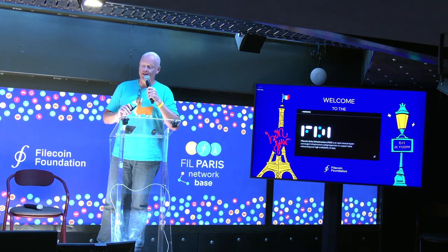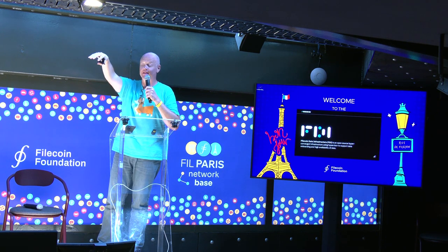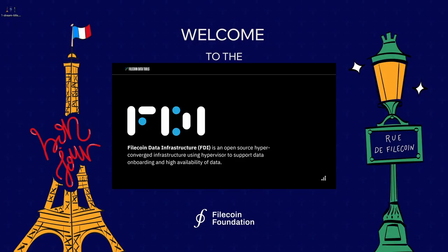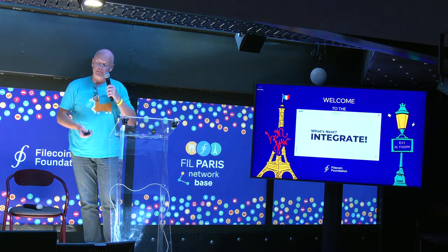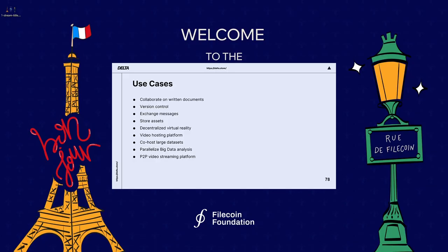Finally, I want to touch quickly on how users are able to deploy to our infrastructure — we white-labeled it and called it FDI. You're able to take all the infrastructure as code, and if you want to stand up your own instance of FDI, you can just pull down the code and it works. What's next? Use your imagination — now that you have Delta and EdgeUR, you can build a video hosting platform, co-host large data sets, P2P video streaming, or for SPs, provide a really cool ingestion layer for your customers.